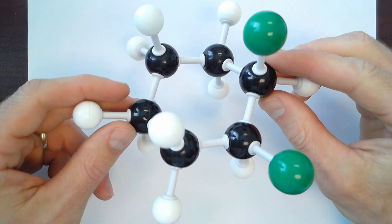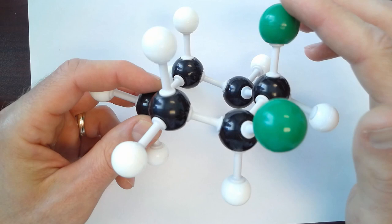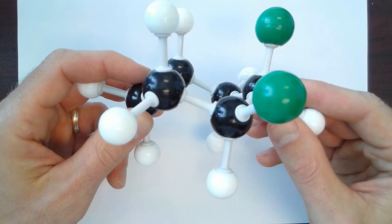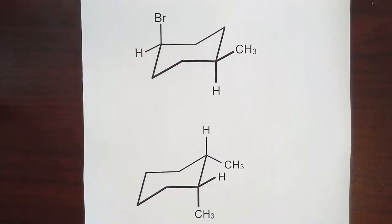As you can see in this three-dimensional model, these two green substituents are both on the same side of the ring. Notice that this green one is above the plane, this white, which is a hydrogen, is below the plane, and then this green is above the plane, and that white is below the plane. So the three-dimensional geometry is not as easy to interpret.